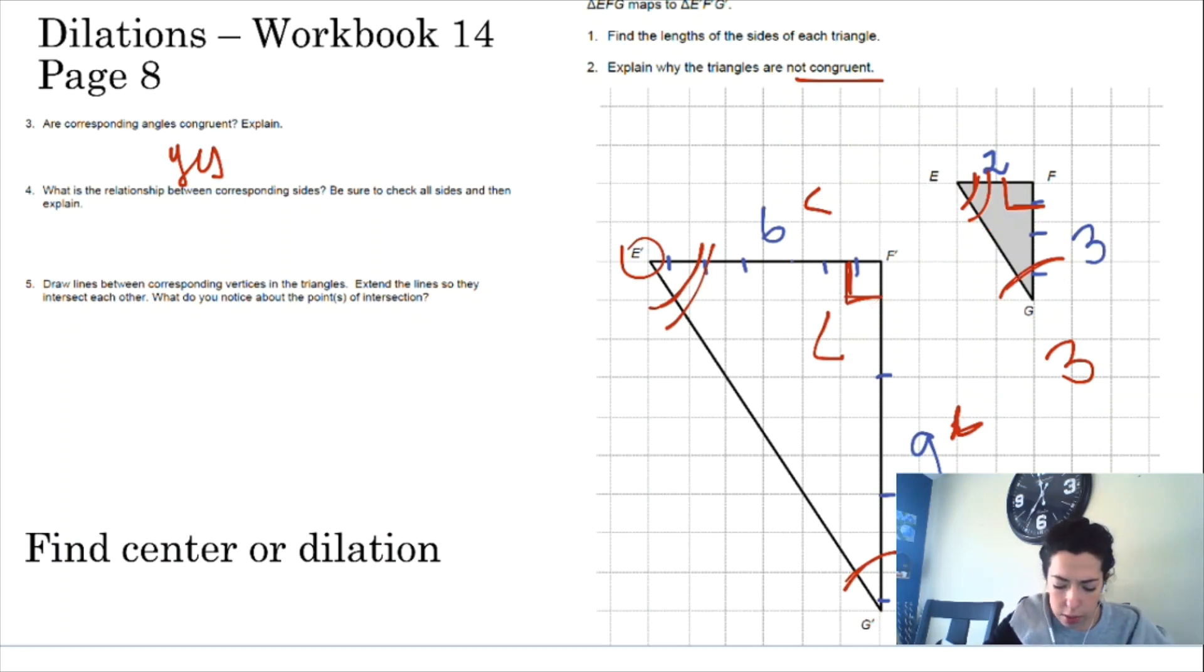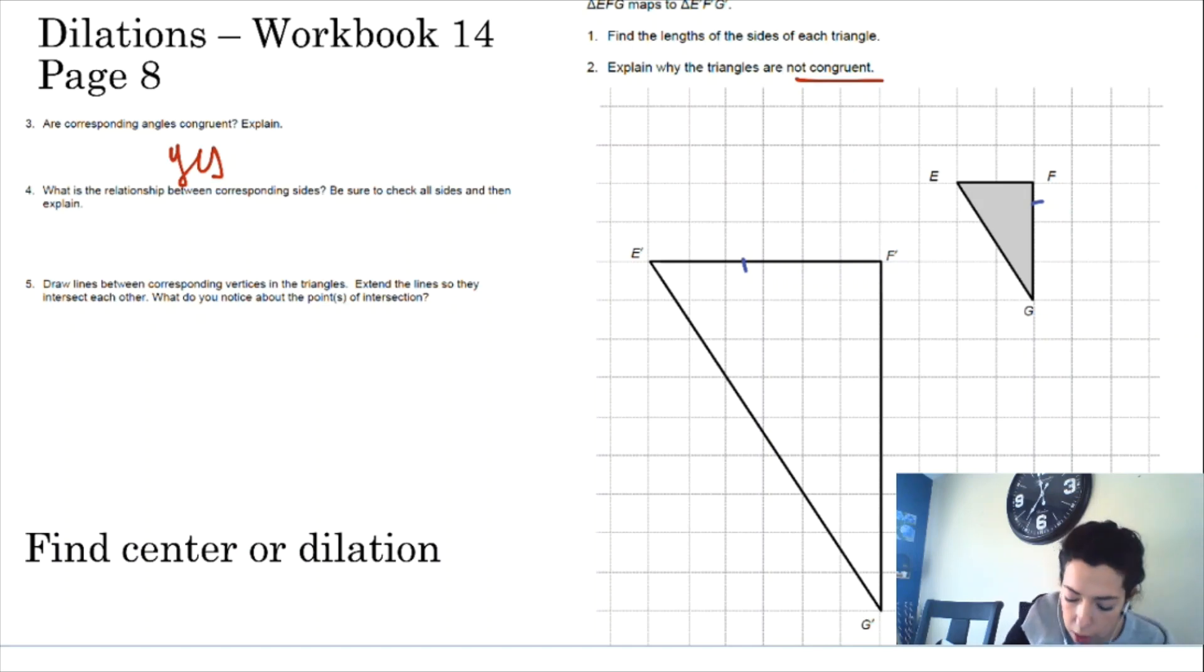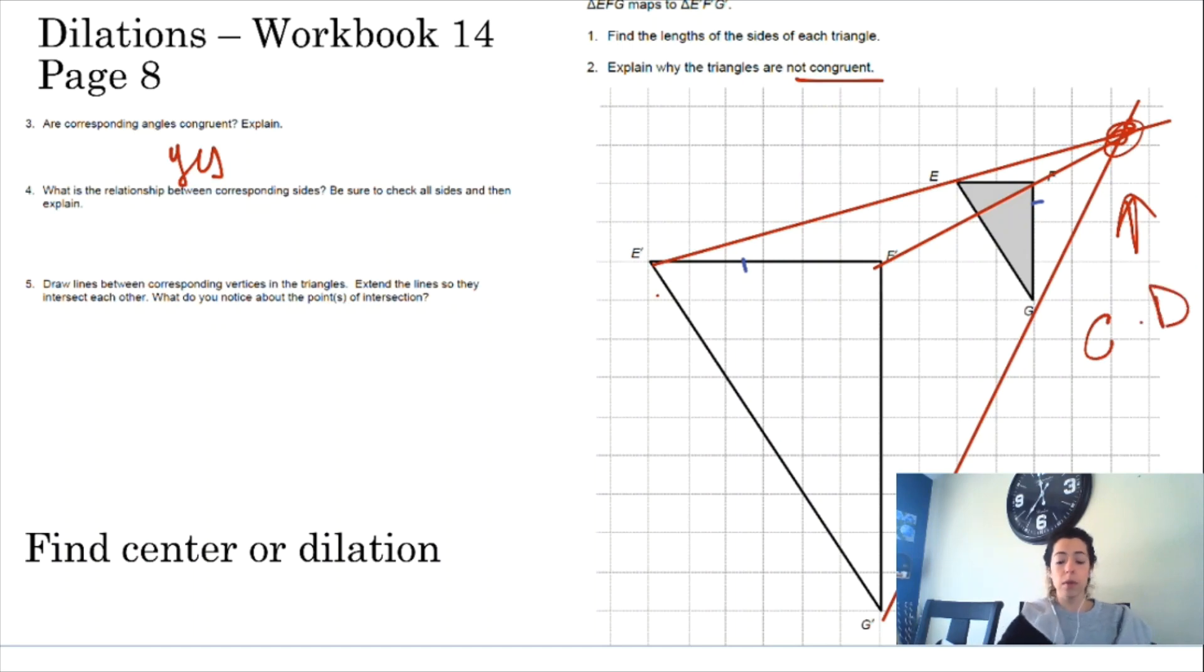Then it says, draw lines between corresponding vertices in the triangles. Extend the lines so they intersect each other. From the previous video, we know that that point of intersection is your center of dilation. So let's quickly connect E with E prime, connect F with F prime, and then G with G prime. That's going to be my center of dilation.